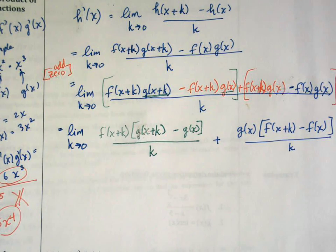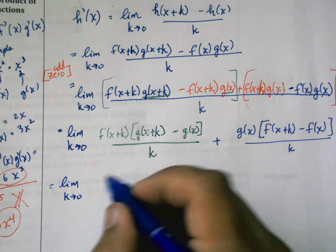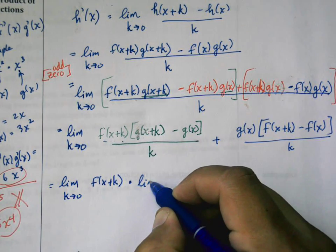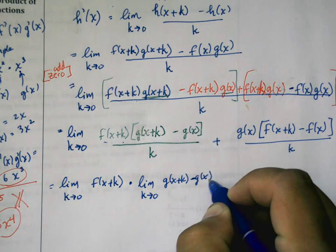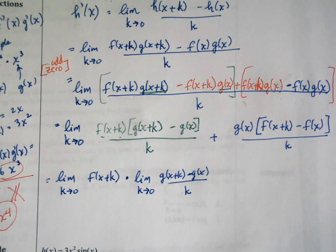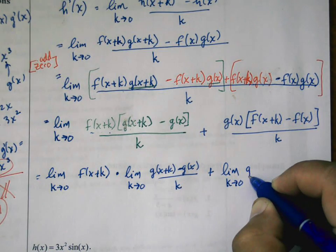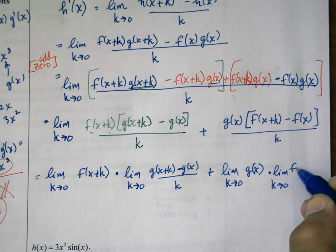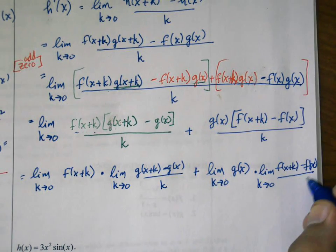And now we can rewrite this as a bunch of different limits. Now we can apply certain limit properties. So I'm going to write this down in a couple pieces at a time. This is really the limit as k approaches zero of f of x plus k times the limit as k approaches zero of g of x plus k minus g of x over k, plus the limit as k approaches zero of g of x times the limit as k approaches zero of f of x plus k minus f of x over k.